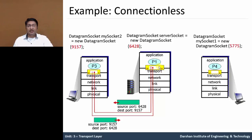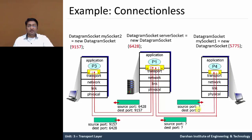Similarly, consider another segment where we identify the source port number and destination port number. The source port is 6428 and destination port is 5775. In the same way, the source port is 5775 and destination port is 6428.